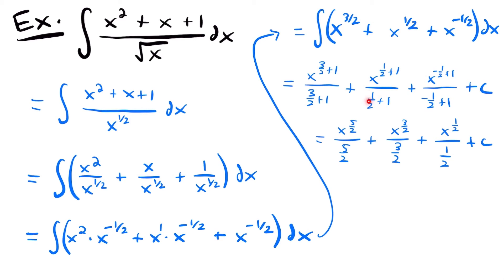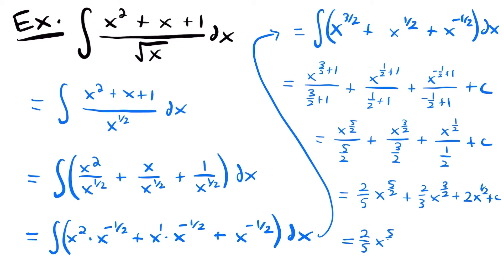Dividing by a fraction is the same as multiplying by its reciprocal. So this becomes 2 fifths times x to the 5 halves power, plus 2 thirds times x to the 3 halves power, plus 2 times x to the 1 half power, plus c. We can rewrite x to the 1 half as the square root of x, giving the final answer: 2 fifths x to the 5 halves plus 2 thirds x to the 3 halves plus 2 times the square root of x plus c.